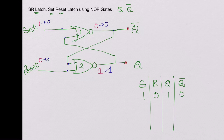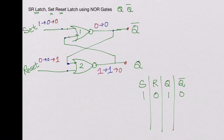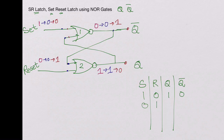Now let's take reset high and keep set low. Once reset is taken high, the Q output goes low, and we have two zeros at the input of the first NOR gate, so Q-bar goes high. So when set is low and reset is high, Q is zero and Q-bar is high.